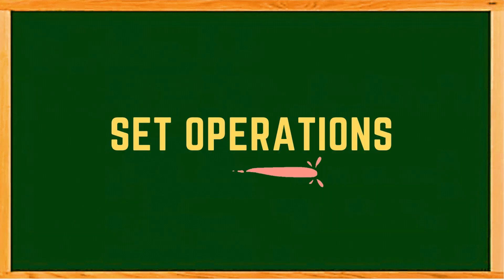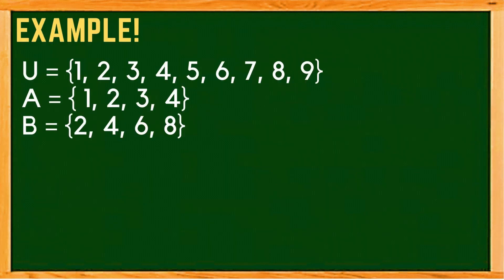Now, let us use the Venn diagram for set operations. For example, the universal set is still the counting numbers less than 10: 1, 2, 3, 4, 5, 6, 7, 8, and 9. Set A consists of counting numbers less than 5: 1, 2, 3, and 4. And set B is the set of even counting numbers less than 10: 2, 4, 6, and 8.